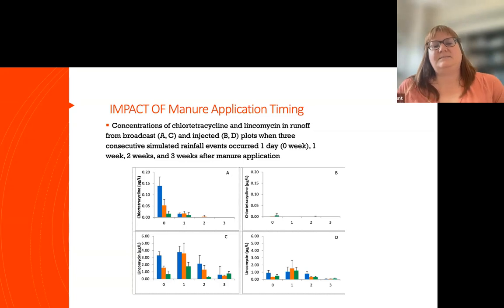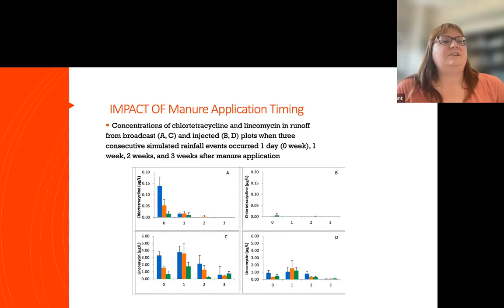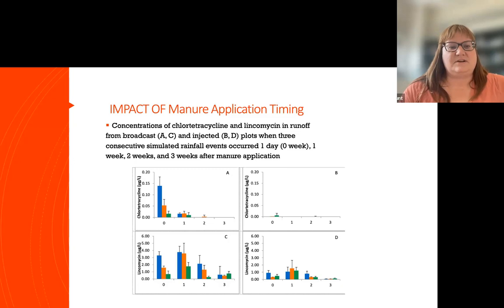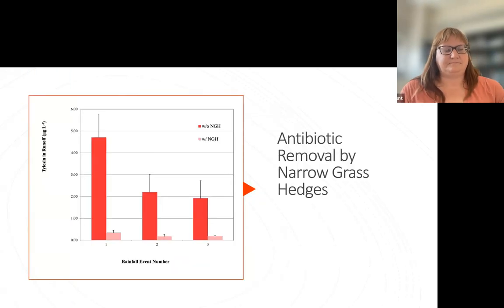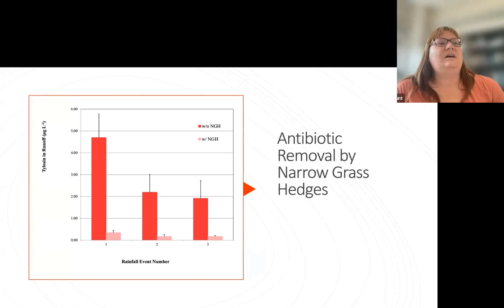Of course, that's not something producers can always time — we don't always know when it's going to rain — but it is something that could be used to develop guidance around manure application, or applying manure in periods where rainfall is less likely to occur. In another study, we looked at an edge of field approach: antibiotic removal in narrow grass hedges.